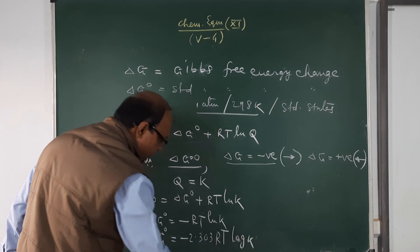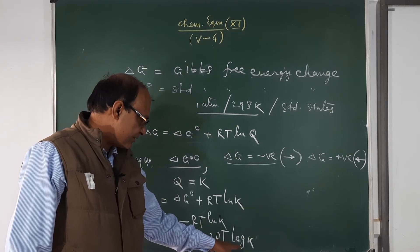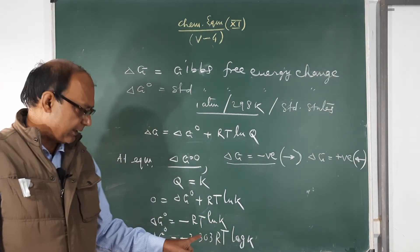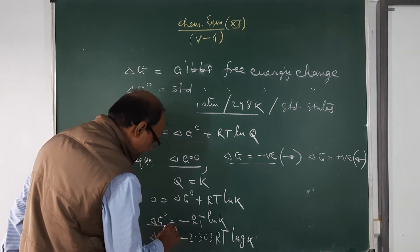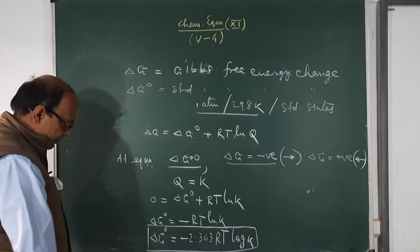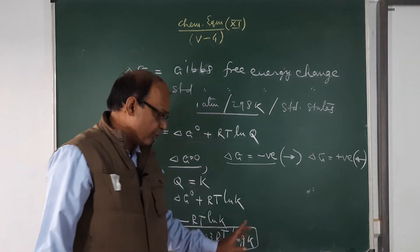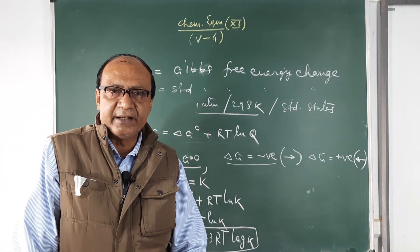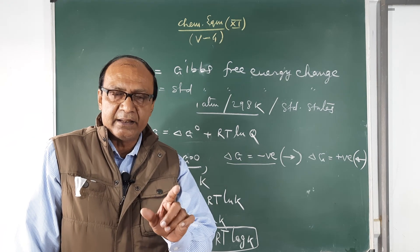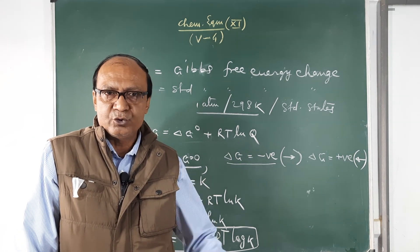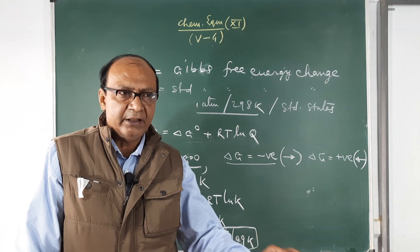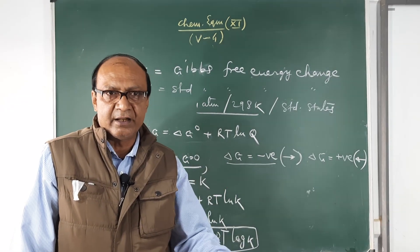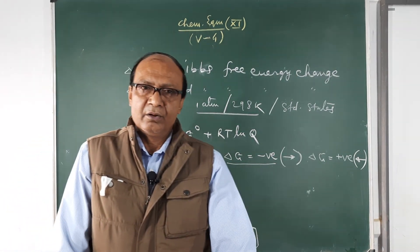Converting from natural log to log base 10: ΔG° = −2.303 RT log K. This is the important relation between standard Gibbs free energy change and the equilibrium constant. This relation is useful for numerical problems. We will look at some questions related to this relation between standard free energy change and equilibrium constant.